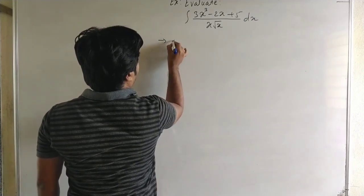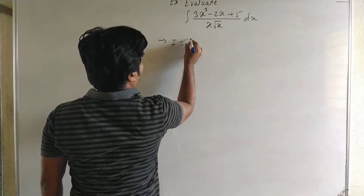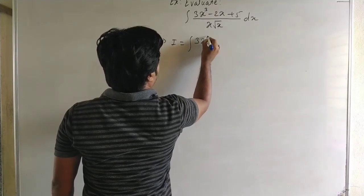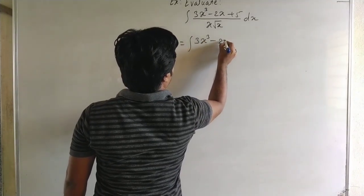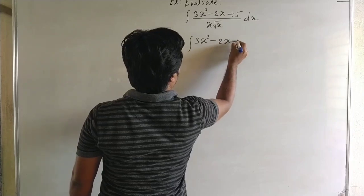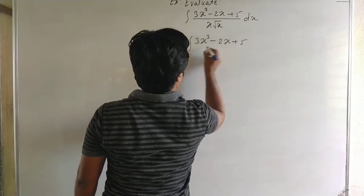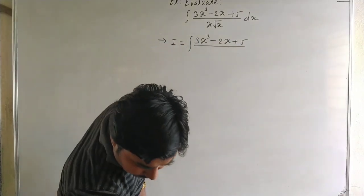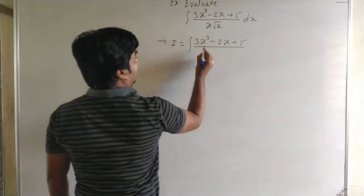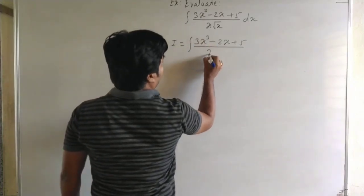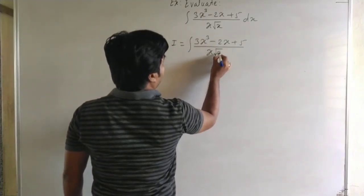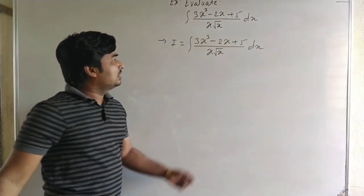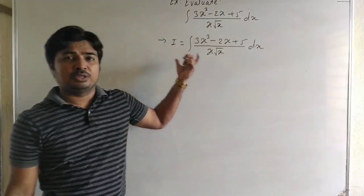Here, I is equal to the integral of 3x cubed minus 2x plus 5 upon x into under root of x dx. We want to find the integral of this function.